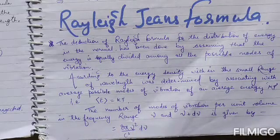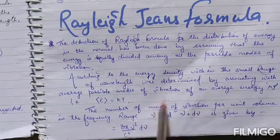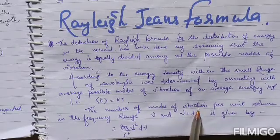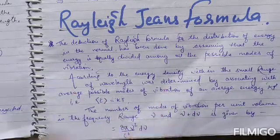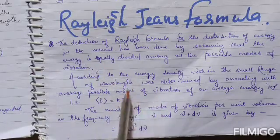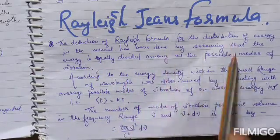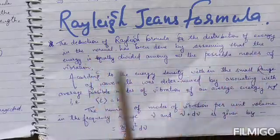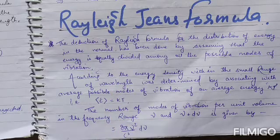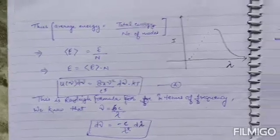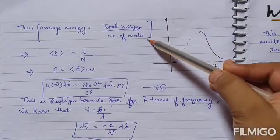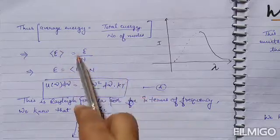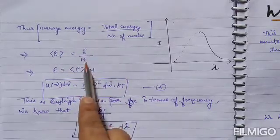Further, we know that average energy according to Planck's Distribution Law is the total energy upon total number of Planck's oscillators or total number of modes. They assumed that energy is equally divided in all possible modes of vibration. So average energy is the total energy upon number of modes, denoted as <E> which equals E/N.